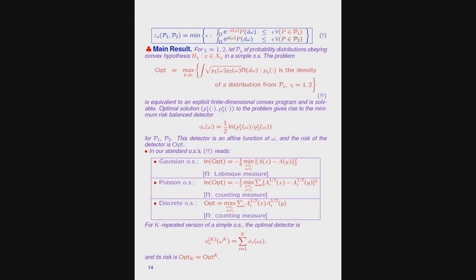The problem is solvable, and if you take a solution it defines a detector — just the likelihood detector for those two distributions. This detector is the optimal solution to the infinite-dimensional semi-infinite problem, and the exponent of the optimal value is the risk. In the Gaussian observation scheme, it reduces to finding two closest points in Euclidean norm. In the Poisson observation scheme and the discrete observation scheme, it reduces to similarly explicit convex optimization problems. For the k-repeated version, the optimal detector can be obtained very easily from the solution to the single observation scheme.